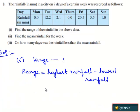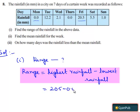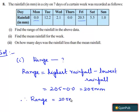From the above data, we can find that 20.5 is the highest rainfall and 0.0 is the lowest rainfall. Therefore, 20.5 minus 0.0 equals 20.5 mm. Therefore, range of the rainfall equals 20.5 mm.